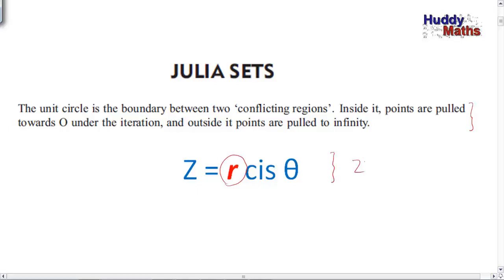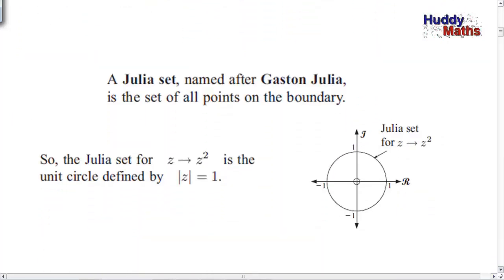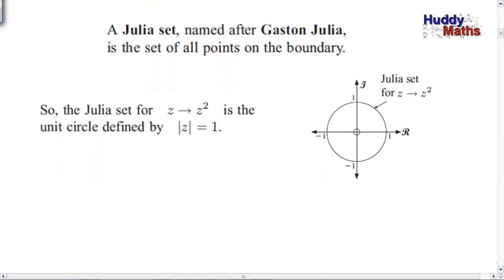Remember: zⁿ = rⁿ·cis(nθ). The argument is going to take it around and around, but the size of the complex number r is going to determine things like whether it's going to stay on the unit circle, converge, or diverge. You're supposed to know that already. Let's go on and have a look at the Julia sets.